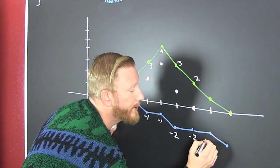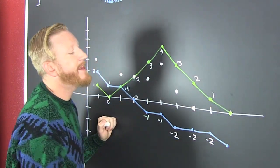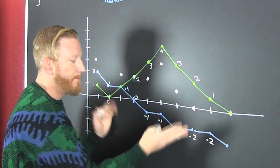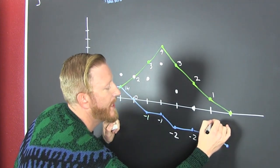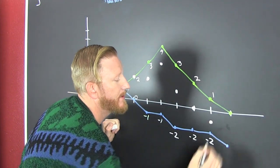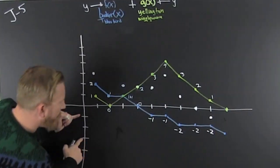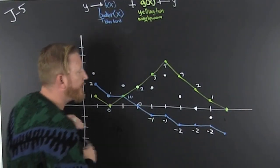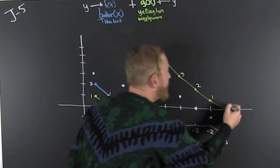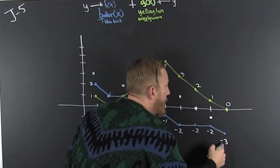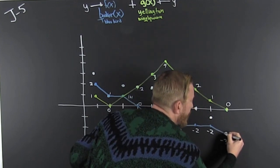Now, Booker is still a minus 2, and Yellington is a 1. That makes their sum negative. We're down here at minus 3. So Booker is at a minus 3 and Yellington is at a 0. So 0 plus a minus 3 is a minus 3.